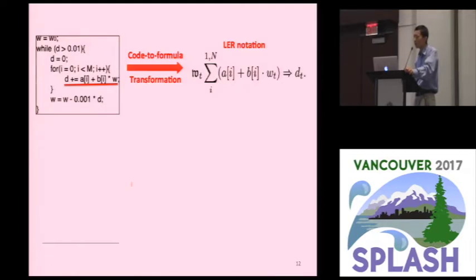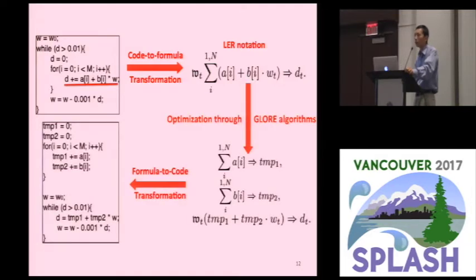With this LER notation, we would be able to do much easier large scope analysis of this loop calculations. We could do all kinds of reordering of computation, reordering of loops, and we can leverage all of those mathematical associativity and other properties much easier. In the second step, GLORY would apply those algorithms that we will talk about later onto this original LER formula and get the optimized LER formula. After this, formula to code transformation would translate these formulas back into loops.